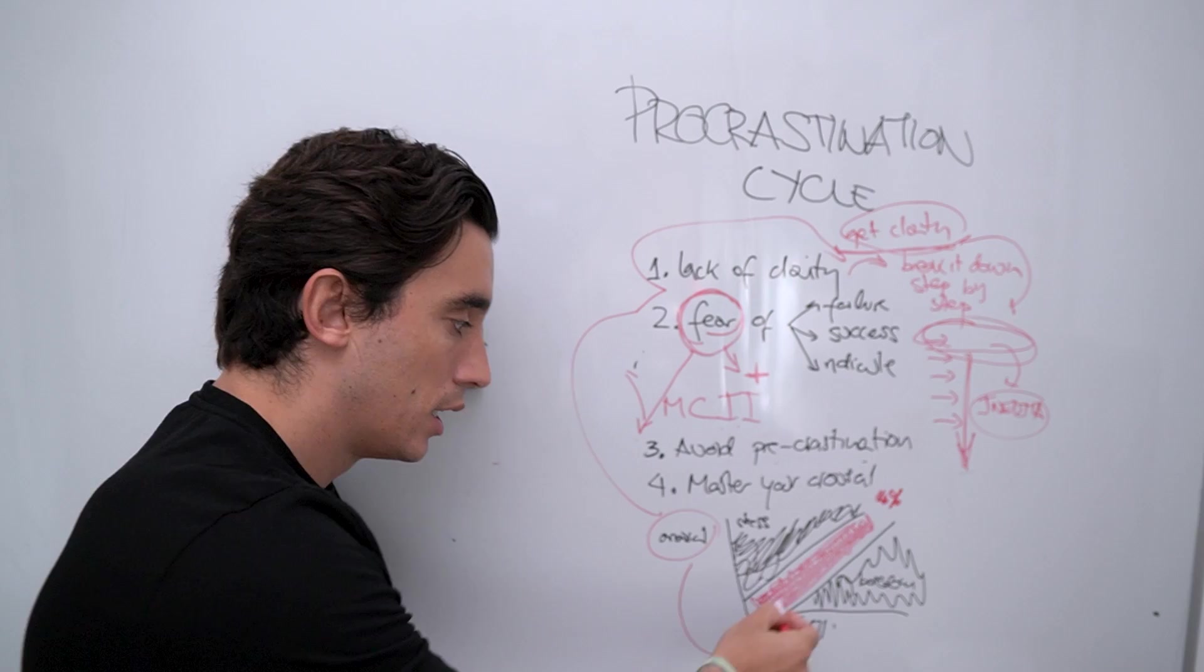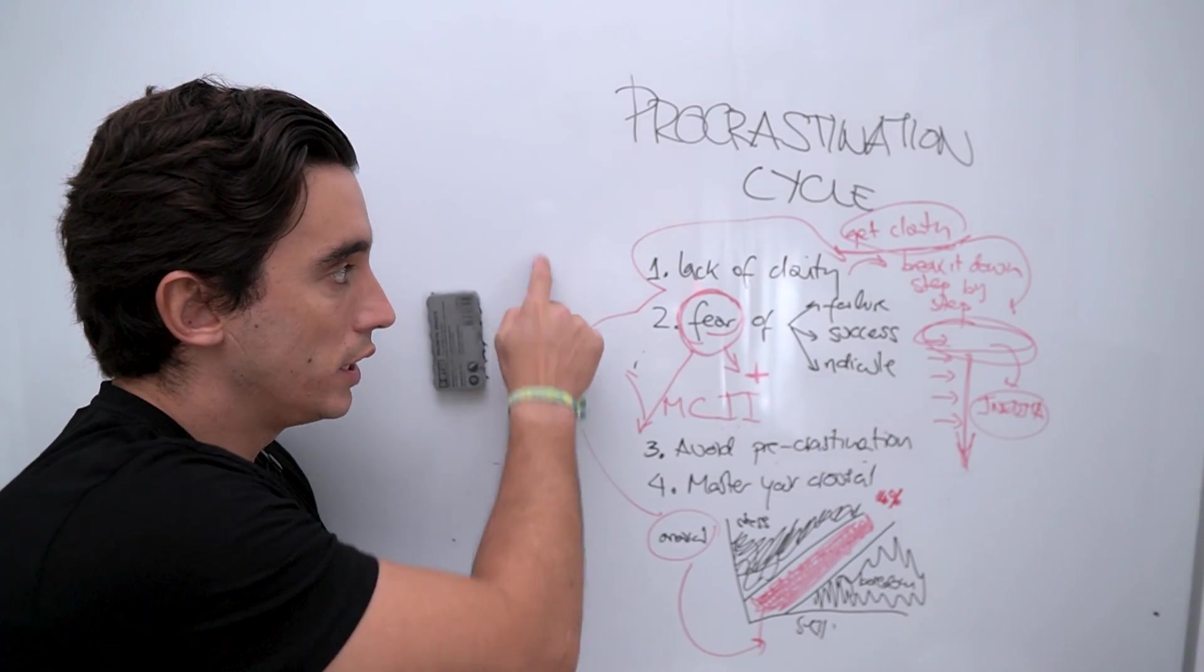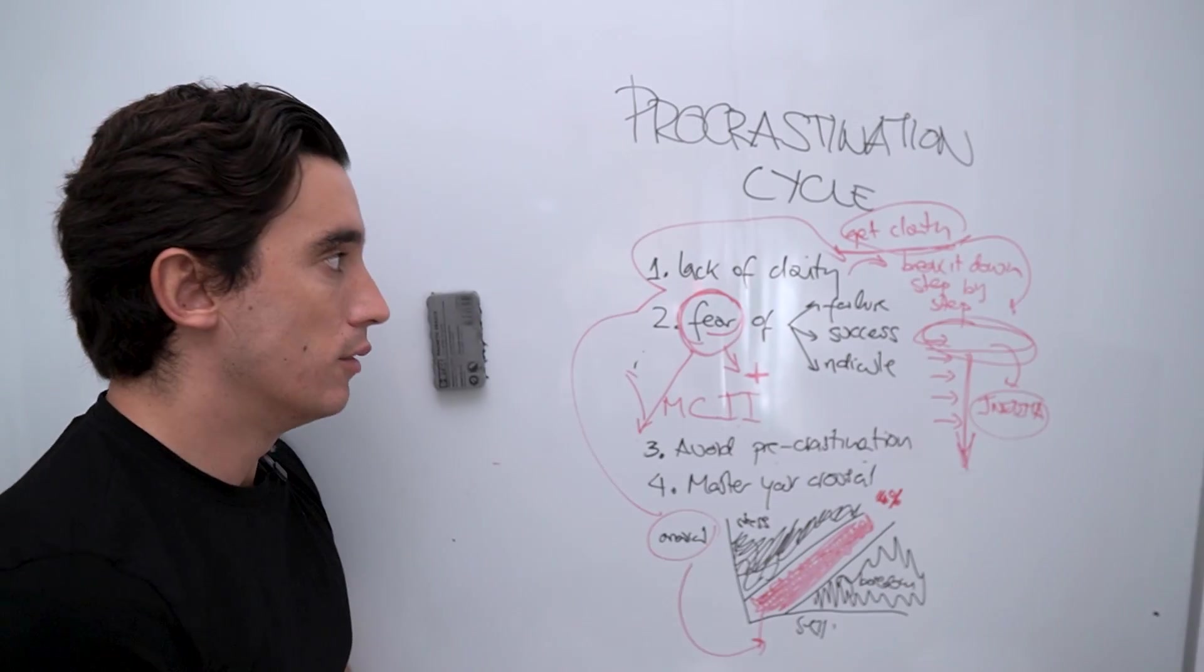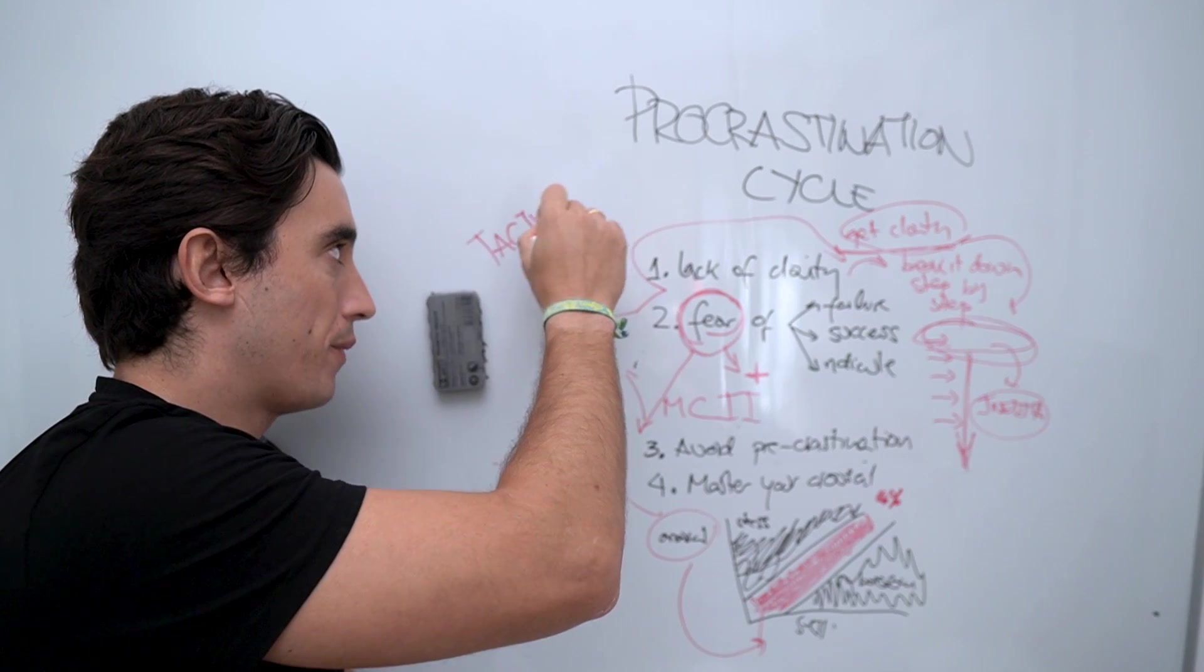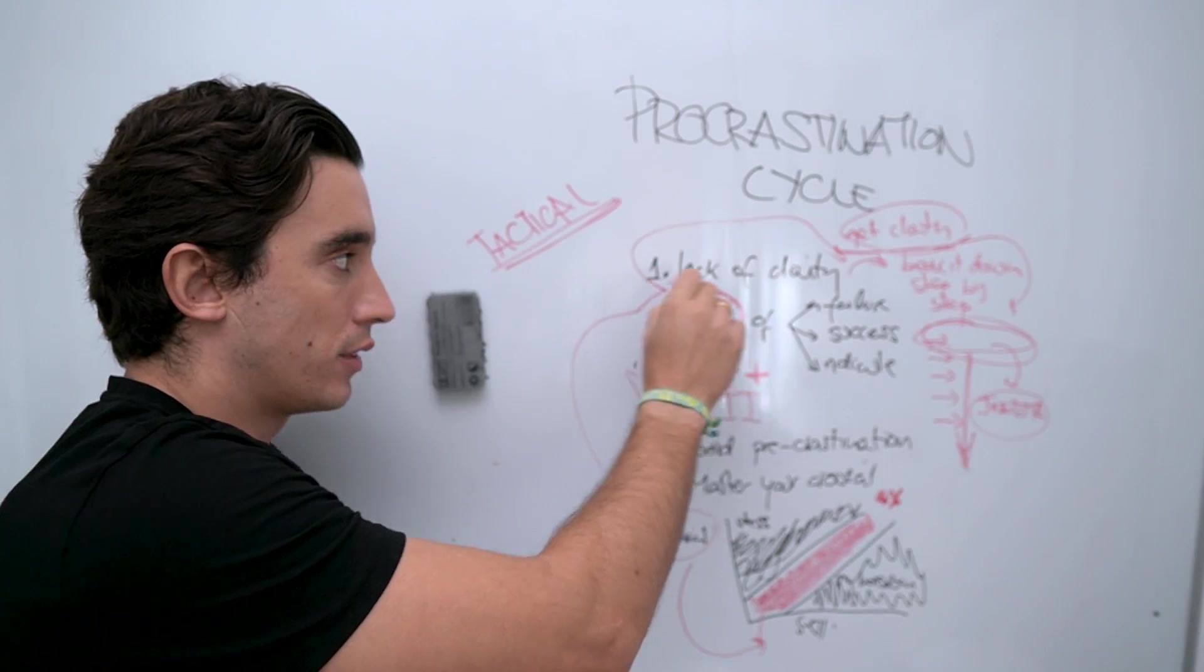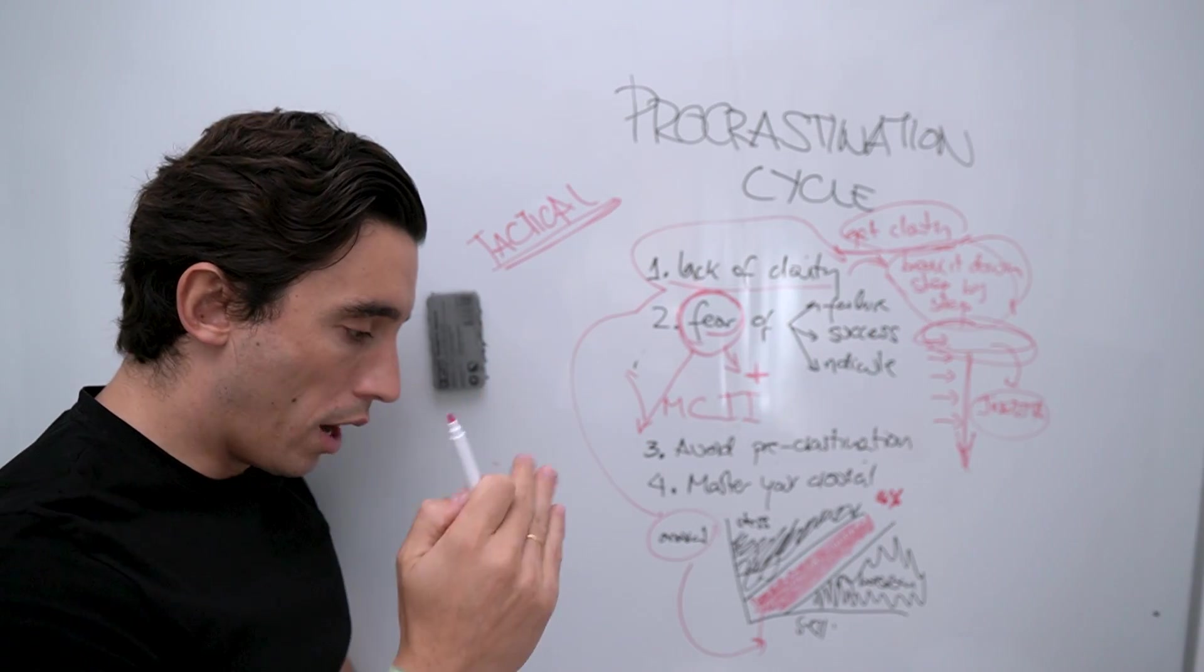So these are the four strategies to remove procrastination at a tactical level. Tactical level meaning when you are working the very same moment that you start procrastinating. So a lack of clarity. You break it down into the necessary steps one by one. And then you make the first step as simple as possible.